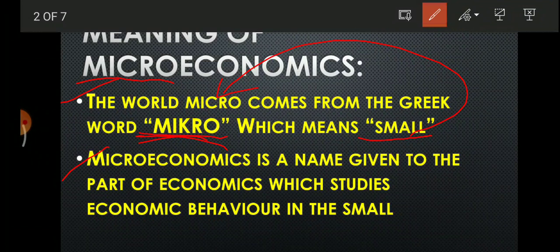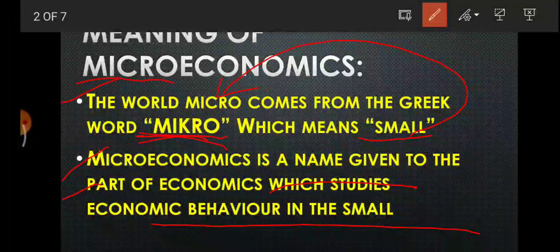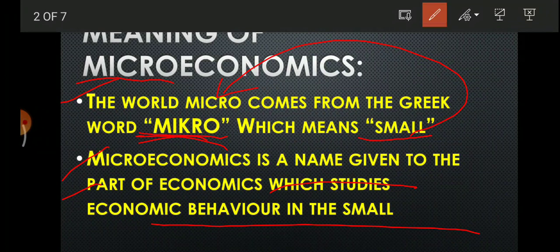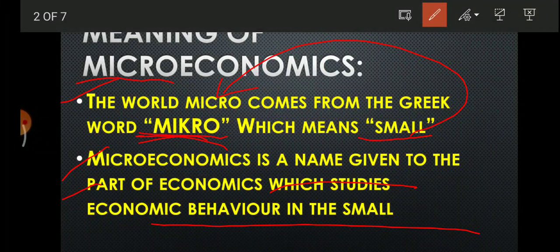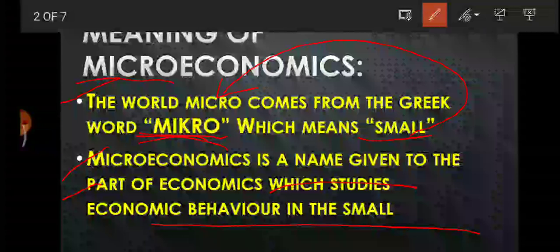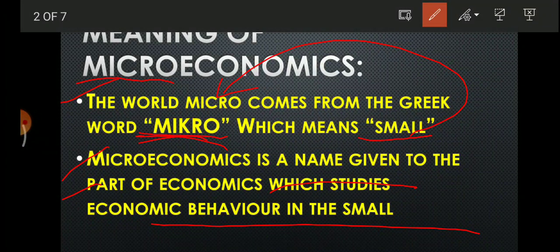Microeconomics is a name given to the part of economics which studies economic behavior in the small — meaning we study the behavior of small units. For example, consider a forest with many trees. If I am talking about a single tree, I am studying a small or single unit — that is microeconomics. But when discussing the whole forest, that is macroeconomics, which operates at a large level.